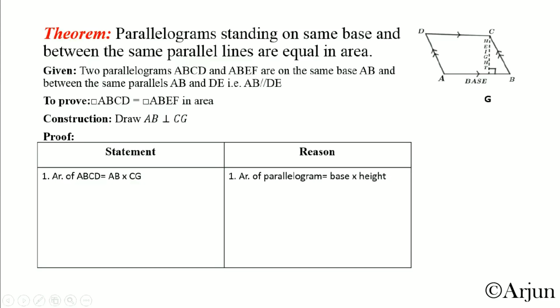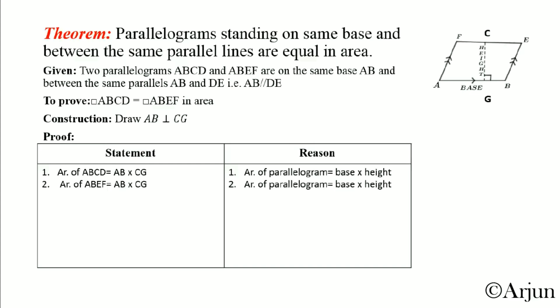First statement: Area of parallelogram ABCD equals AB × CD. We know area of a parallelogram equals base × height, where base equals AB and height equals CD. So area of parallelogram ABCD equals AB × CD. The reason is: area of parallelogram equals base × height.